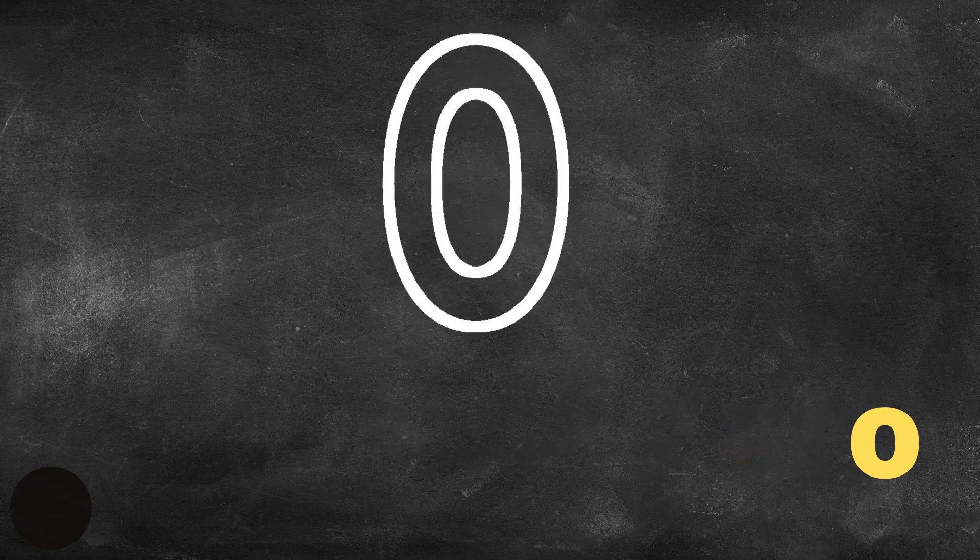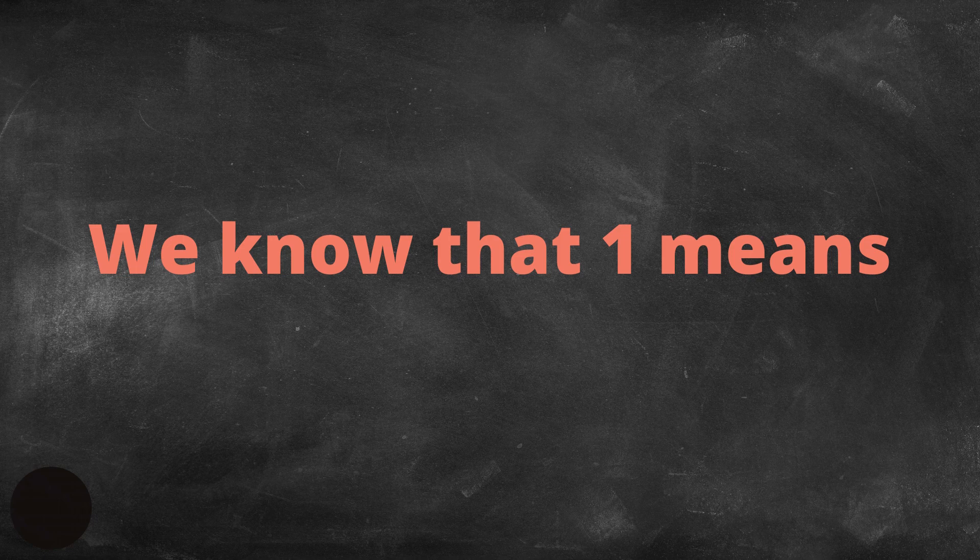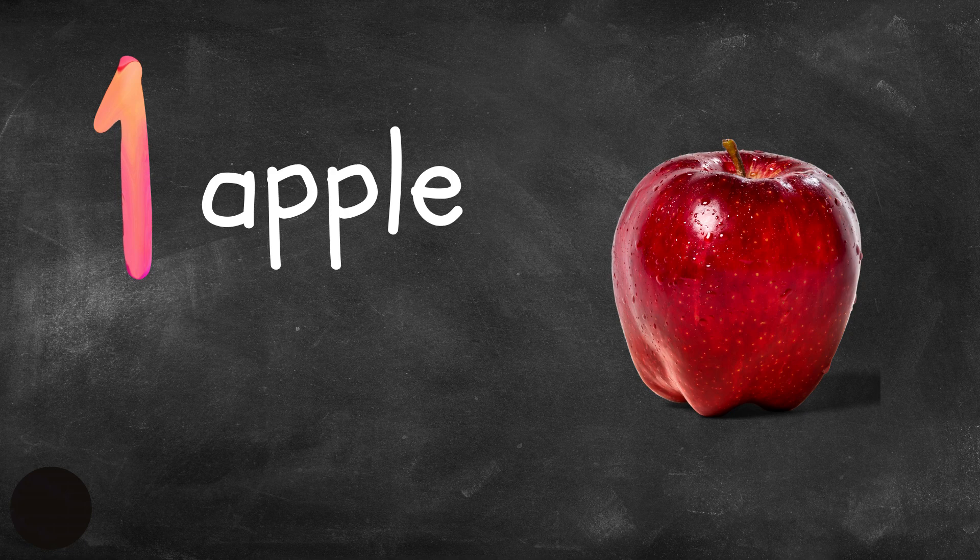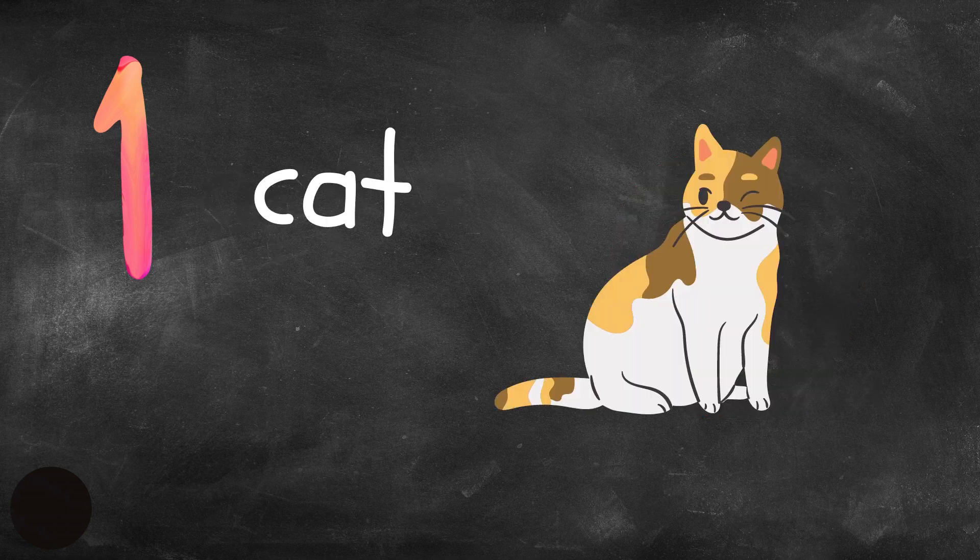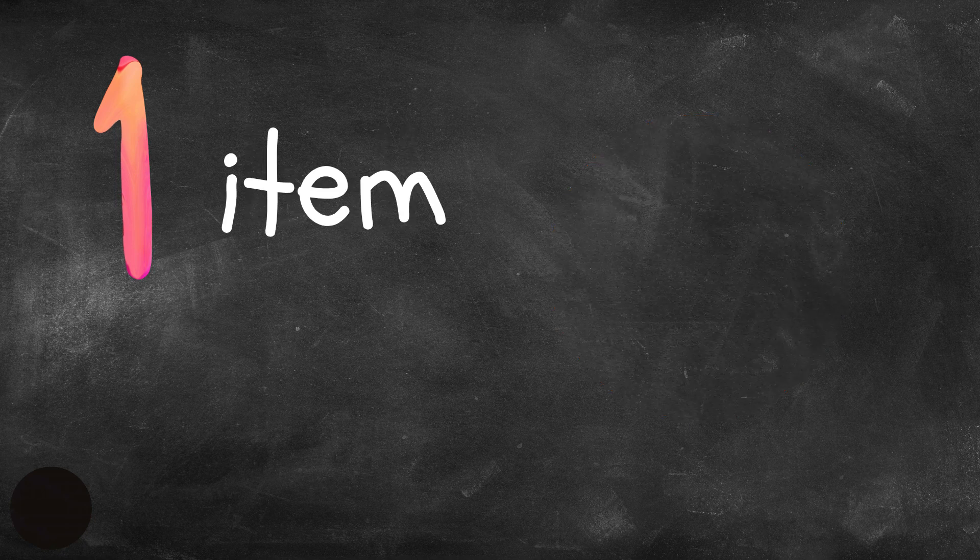Okay, but what does zero represent? Well, we know that one means one apple, one cat, one ball, one item or one thing. So when we say one, we mean it represents one thing, one pencil, one bottle, one anything.